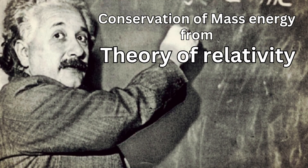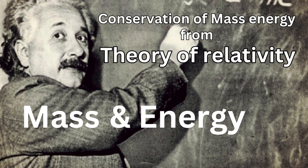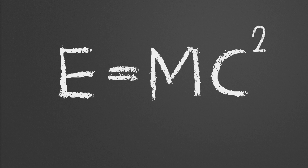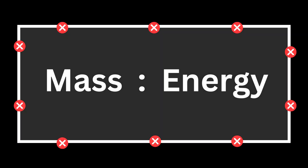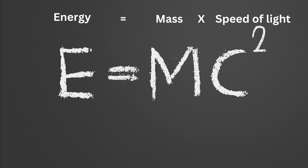This theory holds that mass and energy can be thought of as interchangeable expressions of the same underlying entity. This resulted in the development of the famous equation E equals MC squared, where E stands for energy, M for mass, and C for the speed of light. The mass-energy ratio in a closed system remains constant. However, this equation shows that even mass can be changed into energy, and vice versa.